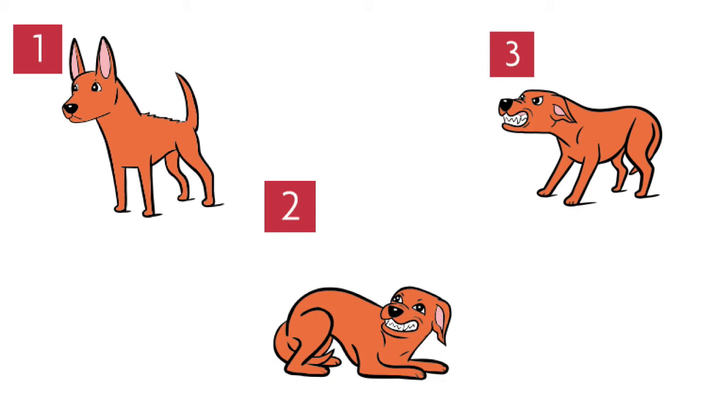On diagram two, the dog is laying down and cowering. The ears are flat but the teeth are showing and the tail is between the legs. This is a dog that is saying please give me space.